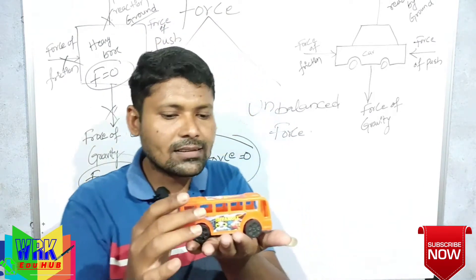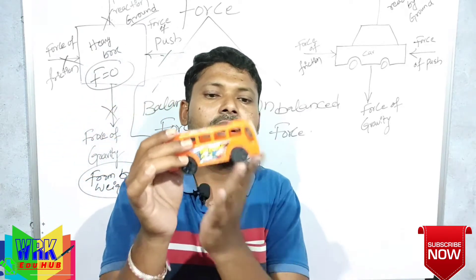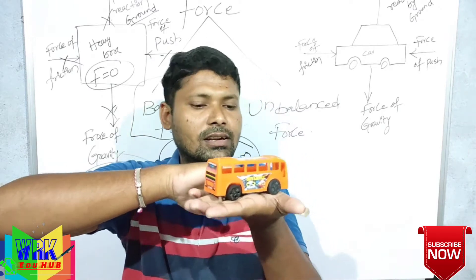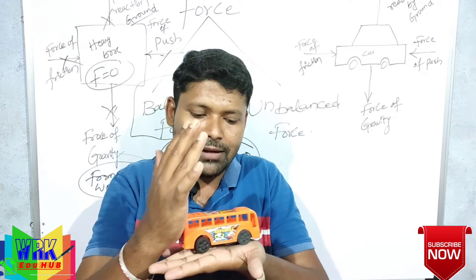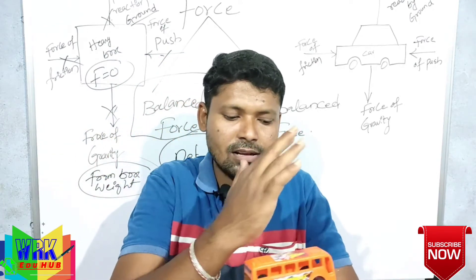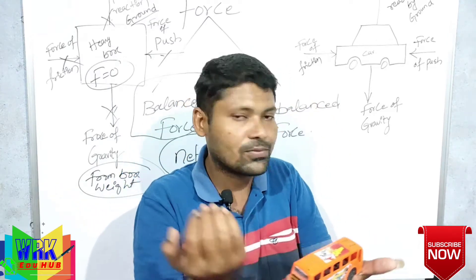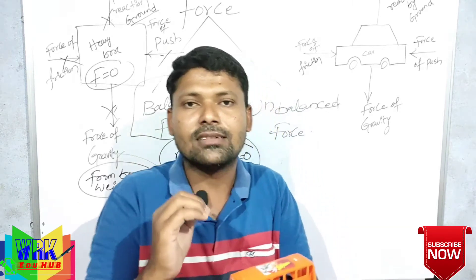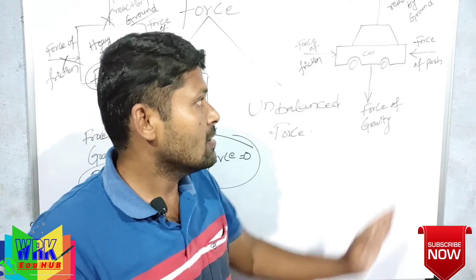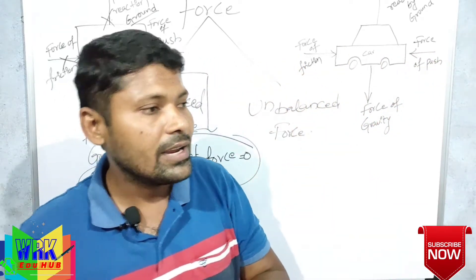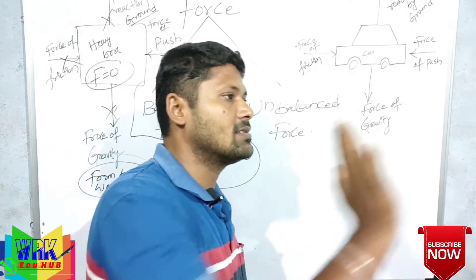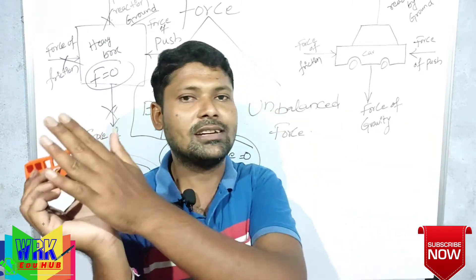Now, force of push is applied. At the same time, from the ground, force of friction acts on the car wheels. If you are pushing, force of friction acts on the toy car wheels, trying to slow it down. If you simply push it, it stops somewhere. If force of friction is greater than force of push, the body slowly comes to rest. If force of push is greater than force of friction, the body will move in the direction of the applied force.